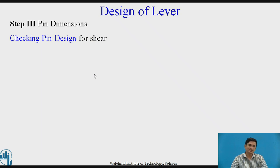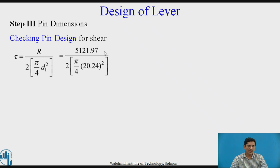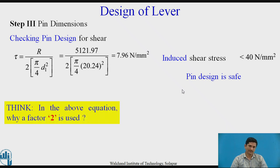Next part is the pin dimensions. We can calculate the pin dimensions as per the bearing failure and need to check the pin dimensions for shear. The equation is shear stress tau is given as force divided by 2 times pi by 4 D1 square, the diameter of the pin, square. We know the value of R, 2 times pi by 4 diameter square. We can get the induced shear stress as 7.96 N per mm square. This induced shear stress must be less than the permissible shear stress, which is in this case. It is less than the permissible stress. Hence we can conclude that the pin design is safe. We can think upon why here is 2 in the equation.